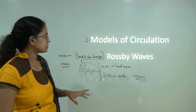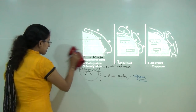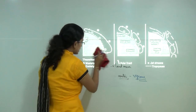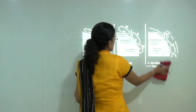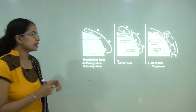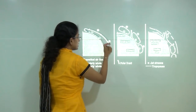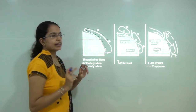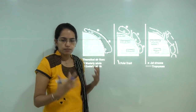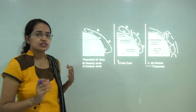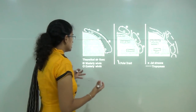If we talk about the models of circulation, we have three models. The first model, the most early one, talks about a single cell — warm air rises from the equator, goes up to the pole, and then subsides back. It is a kind of single cell circulation that operates in the atmosphere, but it was soon realized that this does not reflect reality on Earth, and hence this model was rejected at a very early stage.